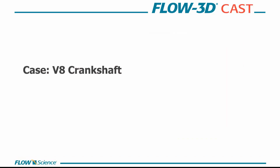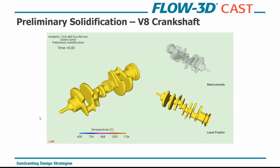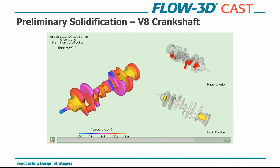The last case is a V8 crankshaft — a more complex part with different thin-to-thick sections where solidification behavior is not intuitive. We start with the preliminary solidification, looking at liquid fraction, solidification front, porosity prediction tool, and temperature gradients. As it solidifies from the outside in, we see quite a bit of porosity on the edges of the fins, due to the part layout closing off feeding to those sections.